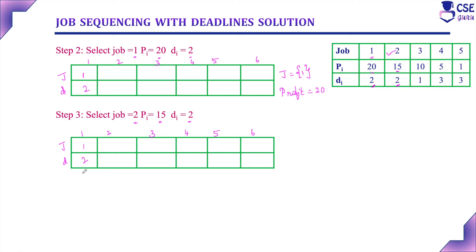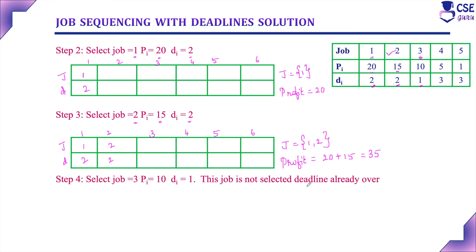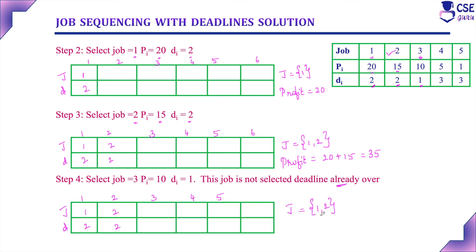Job 1 is assigned to the machine for the first unit of time and job 2 for the second unit of time, so it is possible to complete both jobs. Add job 2 to the job subset as well. The total profit so far is 20 plus 15 equals 35. Next, consider job 3: its deadline is 1, but the first unit of time is already occupied by job 1, so job 3 cannot be completed within its deadline and must be neglected. The current job subset contains jobs 1 and 2, with a profit of 35.